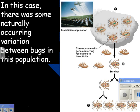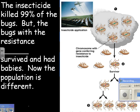There was some naturally occurring variation between the bugs in the population. One mistake students make is saying 'that one needed to mutate to survive' — not true. This one had the mutation already; it was totally random. Then there was the insecticide. It needed that mutation to survive, but it didn't actually mutate in response — it already had the mutation. The insecticide killed 99% of the bugs, but the bugs with the resistance mutation survived and had babies. Now the population is different — that's evolution right there. Now they need a new insecticide.